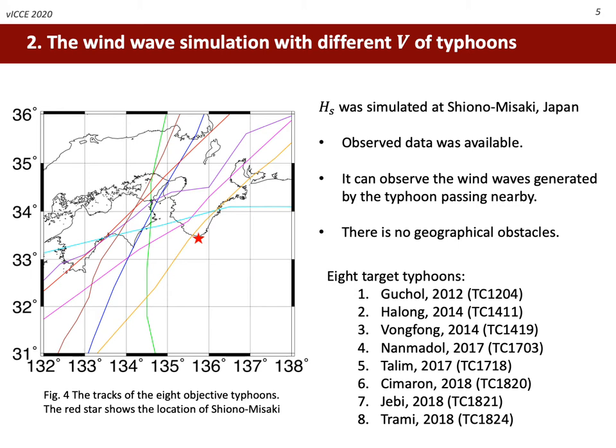Shiono Misaki in Honshu, Japan was chosen as the target location for simulating wind waves. There were three reasons for that: the availability of observed wave data, the ability to observe wind waves generated by typhoons passing nearby, and the absence of geographical obstacles which contributed to simple simulation conditions. The eight latest typhoons passing by Shiono Misaki were picked up. As the figure shows, all typhoons came from the southwest and went northeast after landfalling.